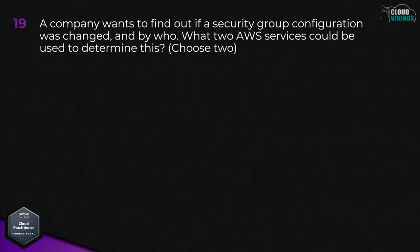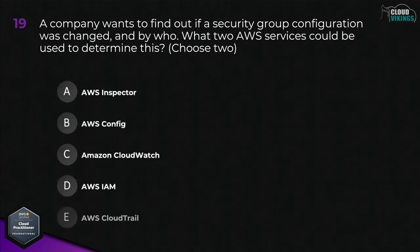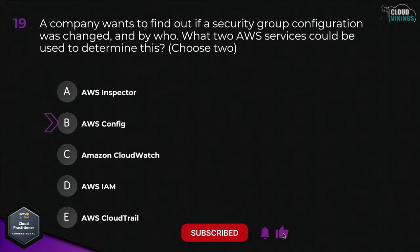Question nineteen: a company wants to find out if a security group configuration was changed and by who. What two AWS services could be used to determine this? Options are: A, AWS Inspector; B, AWS Config; C, Amazon CloudWatch; D, AWS IAM; or E, AWS CloudTrail. For this one we need to choose two possible answers: B, AWS Config, and E, AWS CloudTrail.